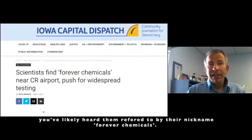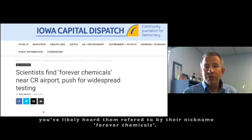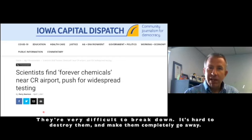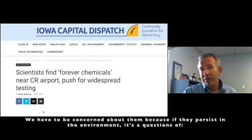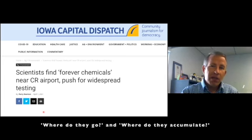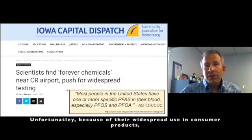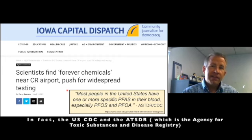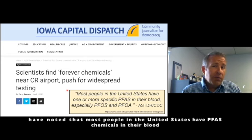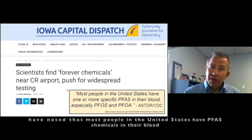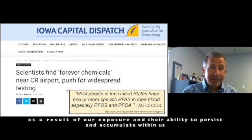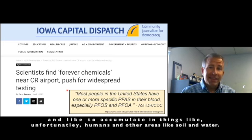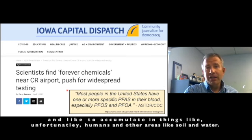If you've seen headlines about PFAS in the news, you've likely heard them referred to by their nickname, 'Forever Chemicals.' They've gotten this nickname because they are quite persistent in the environment — they're very difficult to break down and hard to destroy completely. We have to be concerned about them because if they persist in the environment, the question is where do they go and where do they accumulate? Unfortunately, because of their widespread use in consumer products, we've all been exposed to PFAS chemicals at some point. The U.S. CDC and the ATSDR — the Agency for Toxic Substances and Disease Registry — have noted that most people in the United States have PFAS chemicals in their blood as a result of exposure and their ability to persist and accumulate within us, primarily PFOS and PFOA. These longer-chain PFAS chemicals are very persistent and like to accumulate in humans and other areas like soil and water.